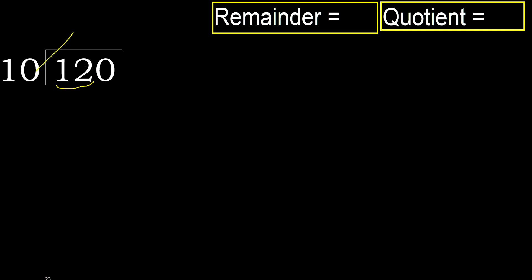10, multiply by which number is nearest to 12 but not greater. Multiply by 2: 20. 20 is greater. Multiply by 1 is 10.